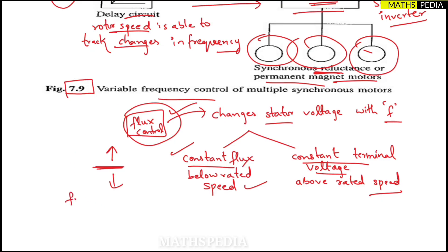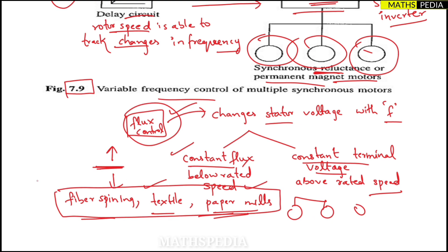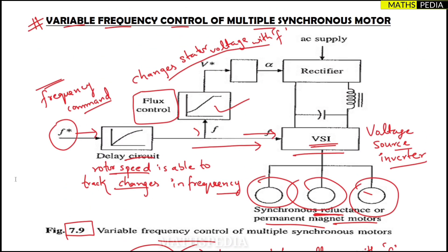Some applications of this drive include fiber spinning, textile, and paper mills. These drives are used in industries where accurate speed tracking between motors is required. In paper mills and similar industries, many motors are used and accurate speed tracking between them is essential, making this type of variable frequency control ideal for such applications.